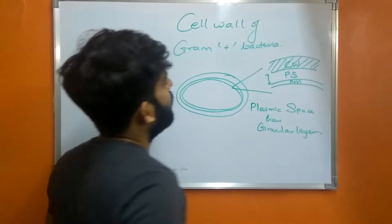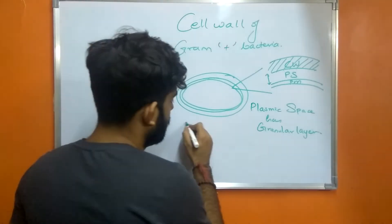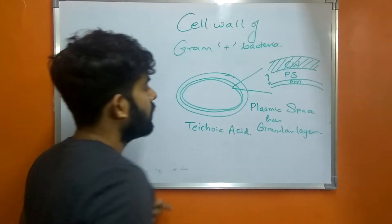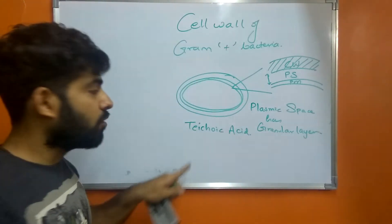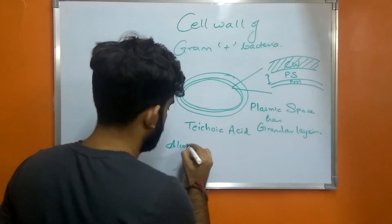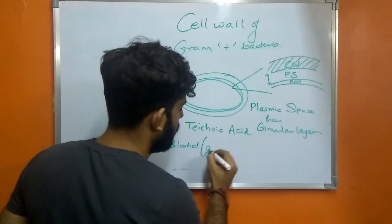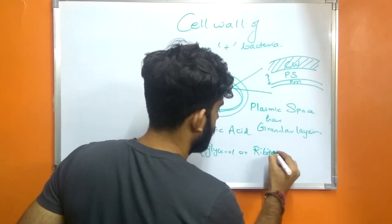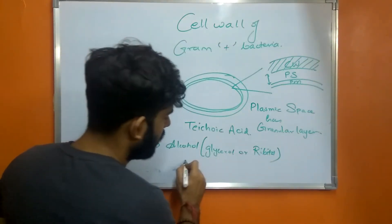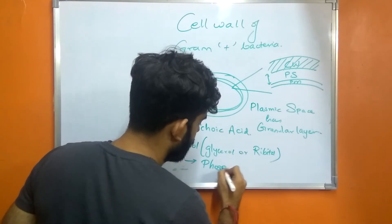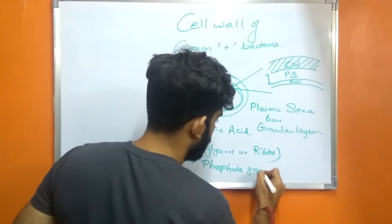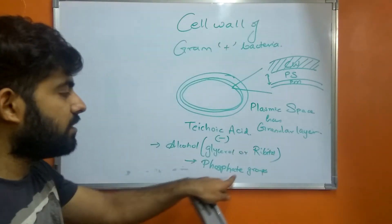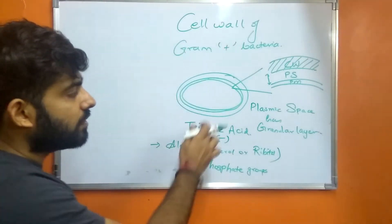The cell wall of a gram-positive bacteria consists of teichoic acid. This teichoic acid consists of an alcohol — which can be glycerol or ribitol — and also a phosphate group. This teichoic acid is negative in charge due to the presence of these phosphate groups.